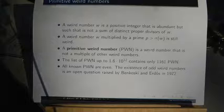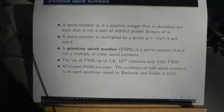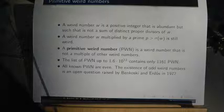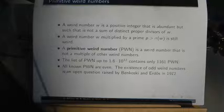Since a weird number multiplied by a sufficiently large prime is still weird, we define a primitive weird number as a weird number that is not a multiple of other weird numbers. Primitive weird numbers are quite rare. The list of primitive weird numbers up to 1.6 × 10^12 contains only 1,161 primitive weird numbers.